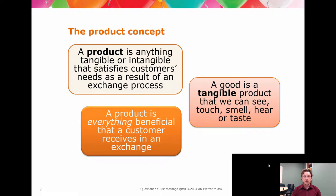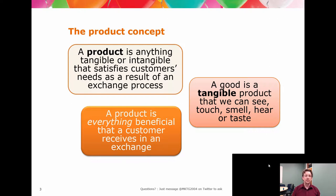A product can be literally anything that is made as an offer. If it's physical, solid, and identifiable — the five senses kick in — it can be stockpiled, resourced, warehoused, and generally combined. It's tangible.